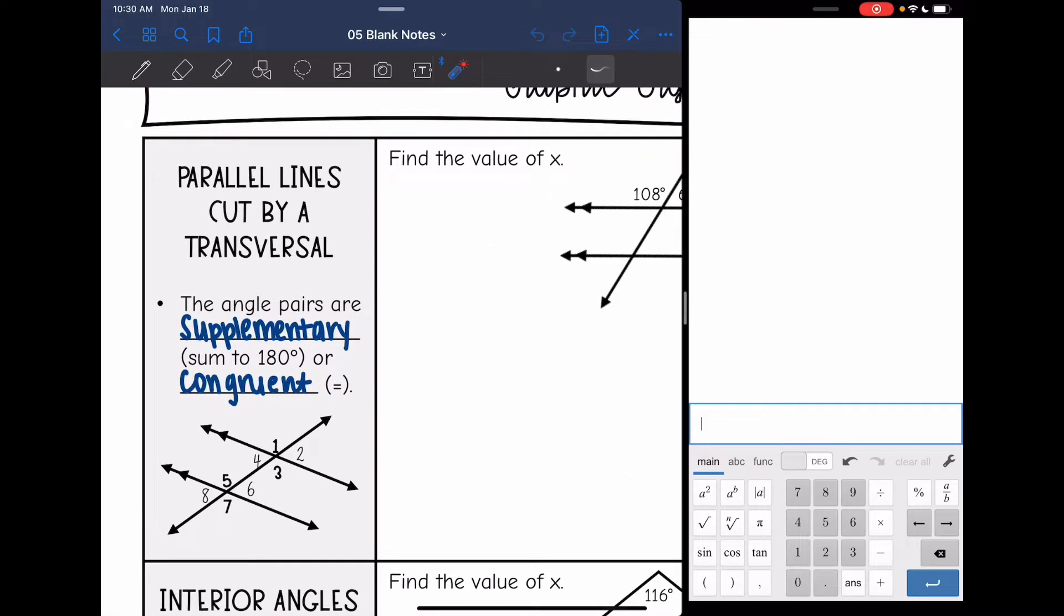Remember, the angle pairs are either supplementary or congruent. So 1, 3, 5, and 7 are all congruent angles, and 4, 2, 8, and 6 are all congruent. If they're supplementary, it's a green and a pink angle together. We add them to 180 degrees.